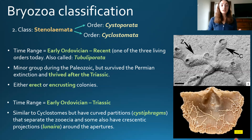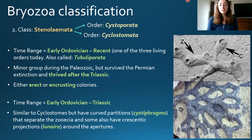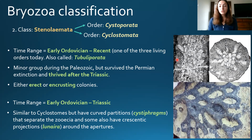The last order of the Stenolaemata class is Cystoporata. Cystoporates went from the early Ordovician to the Triassic — they did not survive until now, but they did survive the Permian extinction, which the first three orders we covered did not. They were similar to cyclostomes in morphology, except that they had curved partitions called cystophracts that separated their zoecia. Some also had crescent-shaped projections called lunaria around their apertures. Their thin sections show a more irregular structure compared to trepostomes and cryptostomes.